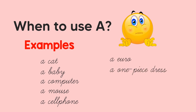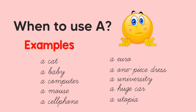Special cases for using A: a euro, a one-piece dress, a university, a huge car, a utopia. Euro is a word that begins with a vowel letter. But take note — we use A when the word begins with a consonant sound, regardless of its spelling. When we say 'euro,' it begins with a Y sound, not 'iuro.' Hence, we use A. Similarly, 'one' begins with the vowel letter O, but this word begins with the consonant sound W — 'woo.' The same goes with 'university' and 'utopia,' which both begin with the Y sound. That's why we use the indefinite article A.